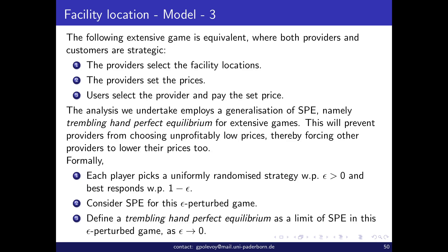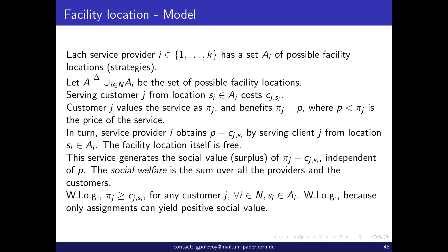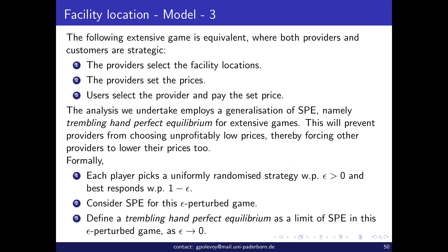We defined the social welfare as the sum of π_j minus the cost of providing service to customer j. The social cost of client j obtaining service from facility i located at s_i is the social value: the cost of service minus plus the utility it gives the client. Summing over all possible service providers gives the social value.